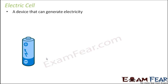An electric cell is a device that can generate electricity. If you look at any pencil battery — you can take it out from your remote or a clock — and observe it, you will see that there are two ends. One end has a cap-like structure and the other end has a disc-like structure. The cap-like end has a positive symbol and the other end has a negative symbol, showing the positive and negative terminals of the battery.